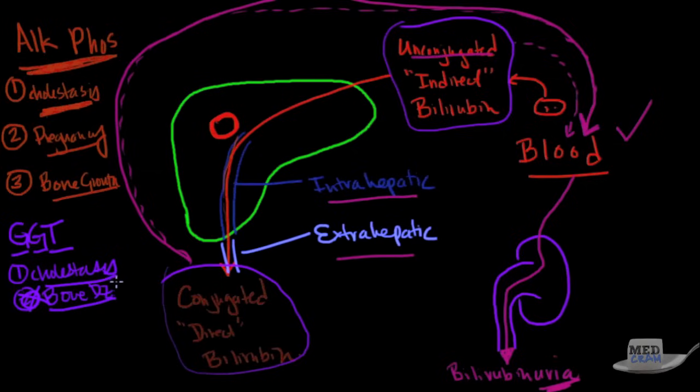So the way this is used is if you have a patient with a high alkaline phosphatase and you want to see whether or not this is GI related or liver related, you can get a gamma glutamyl transferase. And if it is low, if the gamma glutamyl transferase is low, that means it's not from the liver. If it's high, then that means it probably is from the liver.